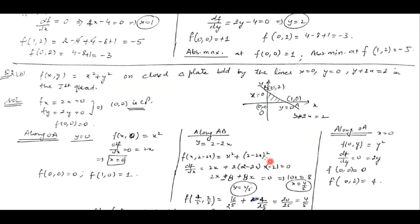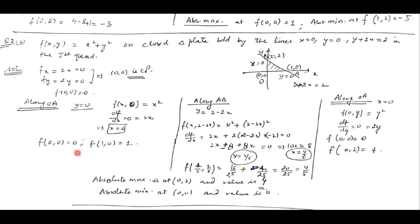Similarly we will do part B. Here we are having this function and the closed triangular plate bounded by x = 0, y = 0, and y + 2x = 2. The procedure is the same: find the critical points by finding partial derivatives and putting them to 0, then check along all boundary lines OA, AB, and BO. Along OA, y = 0, so put y = 0 in the main equation with x varying from 0 to 1. After calculating all values and observing, the function attains maximum value of 4 at (0, 2) and minimum value of 0 at (0, 0).